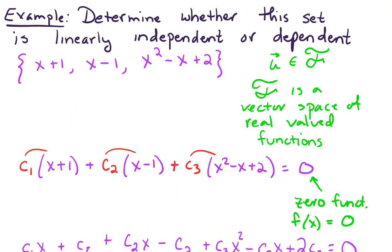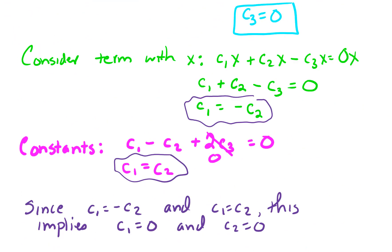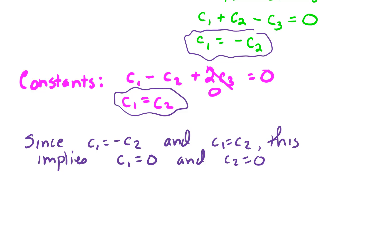At the end of the day, we're back looking at this equation. Is this set linearly independent or dependent? We did the analysis. We found out that if this equation is going to hold, it must be the case that C1, C2, and C3 are all zero. So let's write down our conclusion.